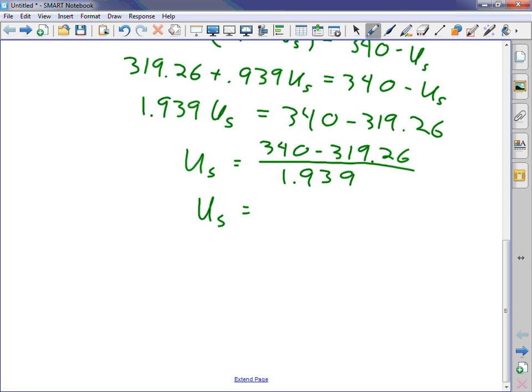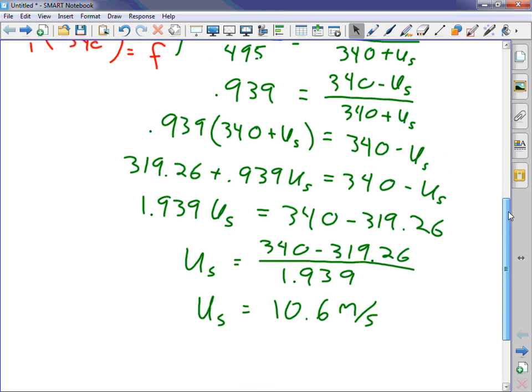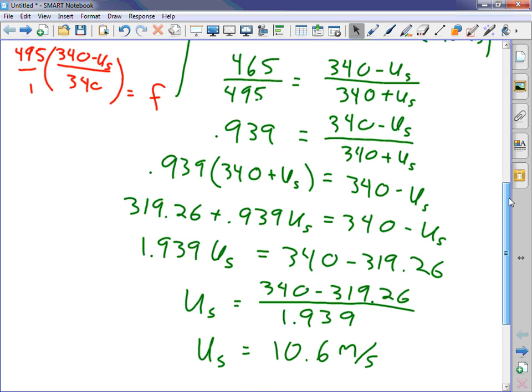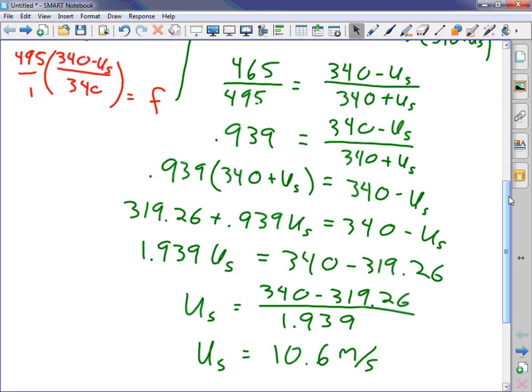Grouping like terms right now, I'm going to come out with 1.939 u sub s equals 340 minus 319.26. u sub s is going to equal 10.6 meters per second. Is that what everyone's coming out with?